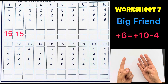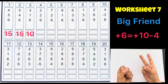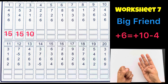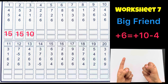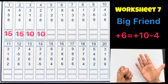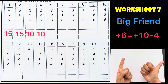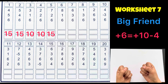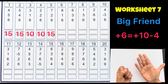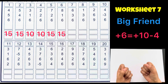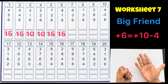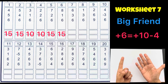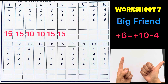3 plus 1 plus 6 plus 10 minus 4, answer is 10. 2 plus 2 plus 6 plus 10 minus 4, answer is 10. 7 plus 2 plus 6 plus 10 minus 4, answer is 15. 8 plus 1 plus 6 plus 10 minus 4, answer is 15. 6 plus 3 plus 6 plus 10 minus 4, answer is 15.